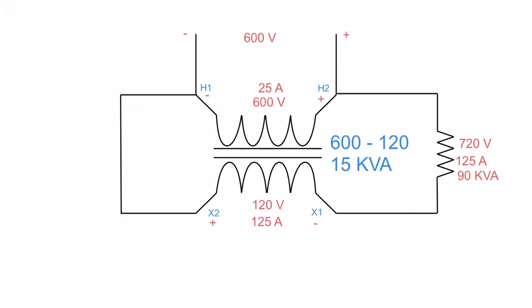With the principle that power in equals power out, if the load is asking for 90 kVA, the line side has to supply 90 kVA. With 600 volts on the line, 90,000 divided by 600 volts gives a line current of 150 amps.